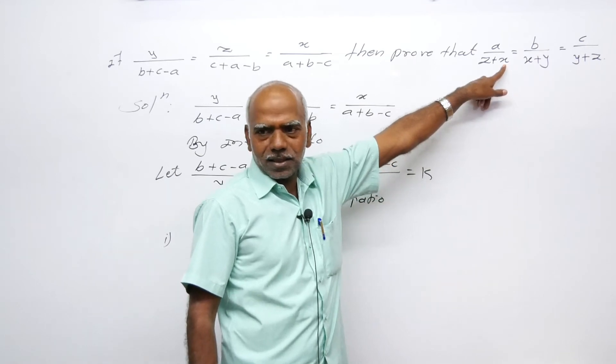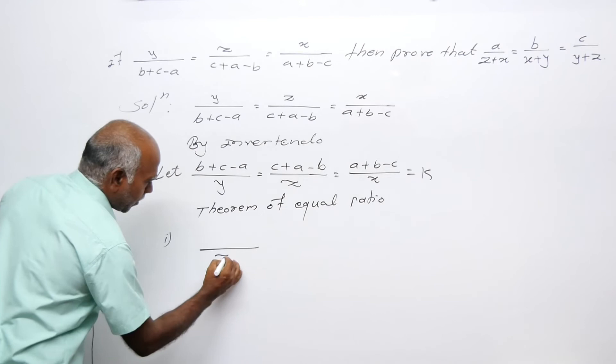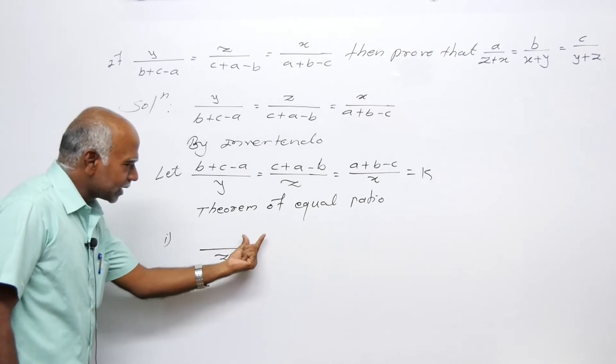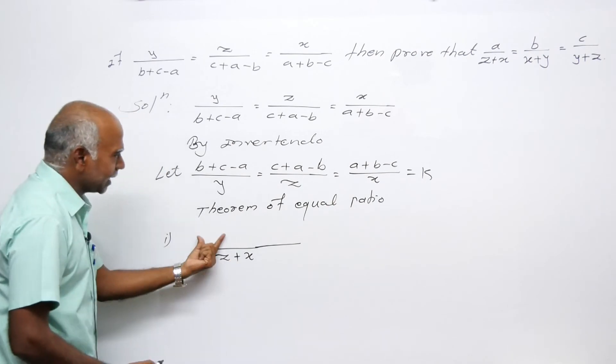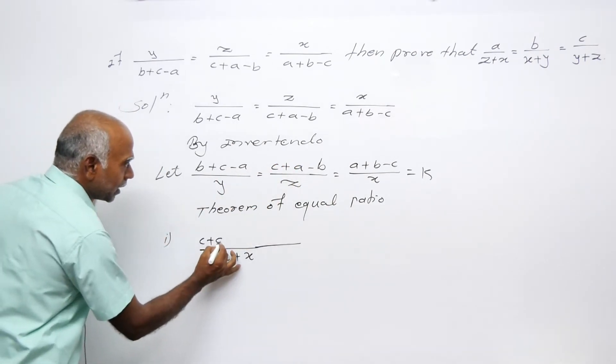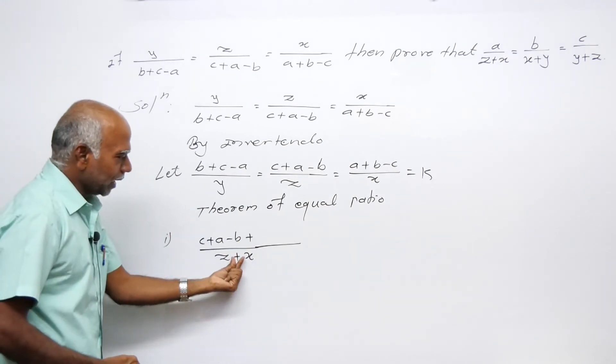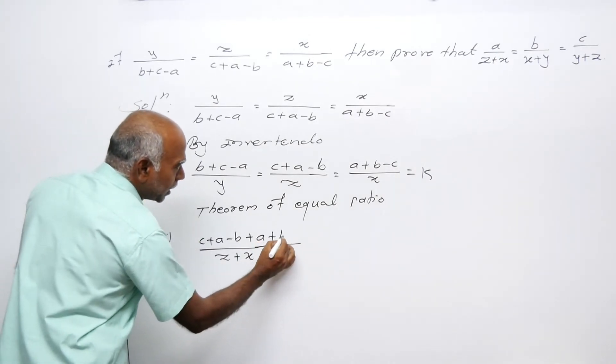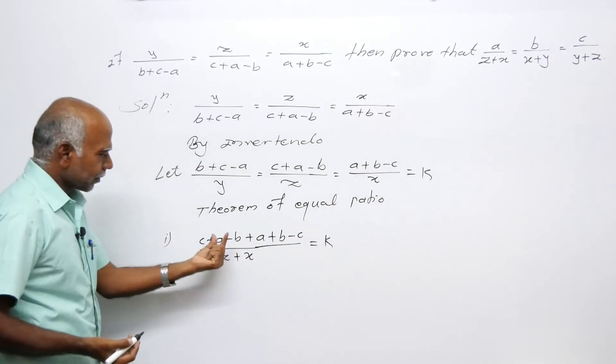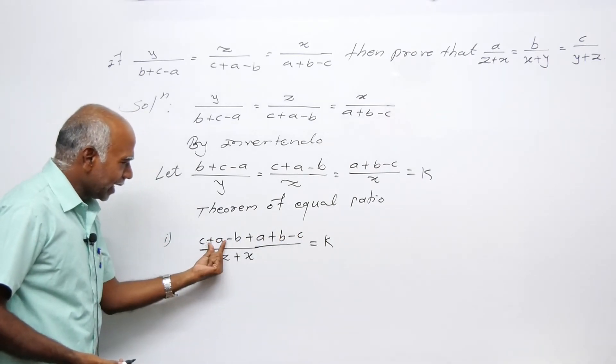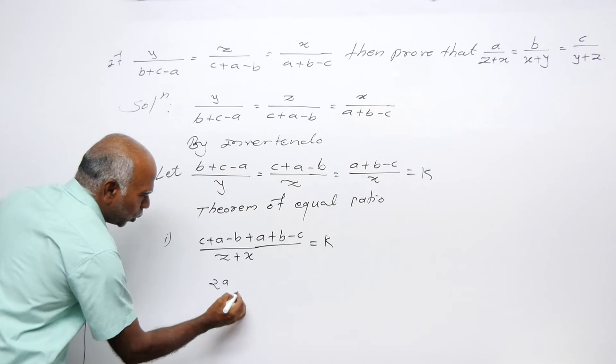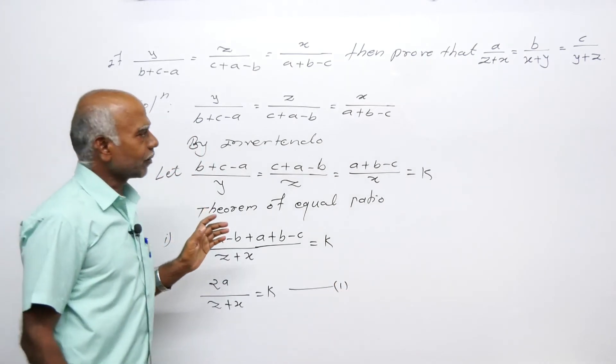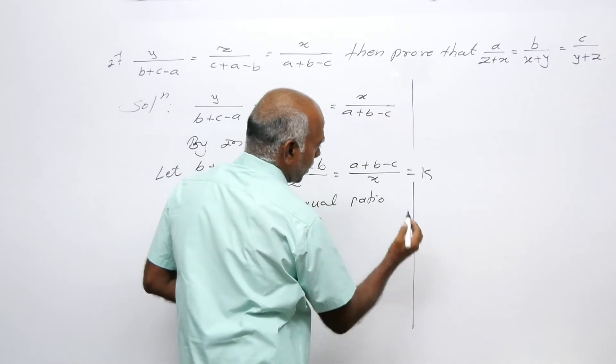From the theorem, let's add: z plus x. The z value is C plus A minus B plus the x value is A plus B minus C. This equals 2A upon z plus x equals k. This is statement number 1.